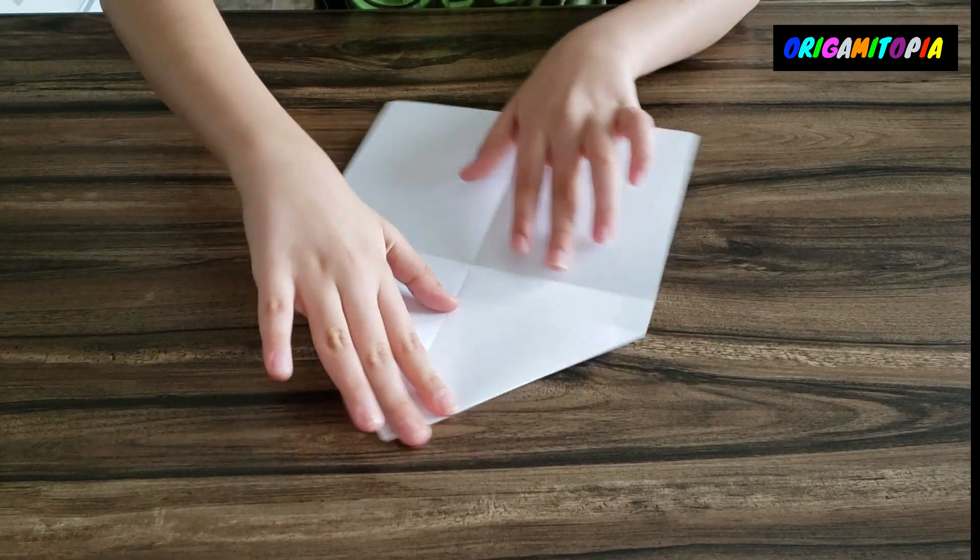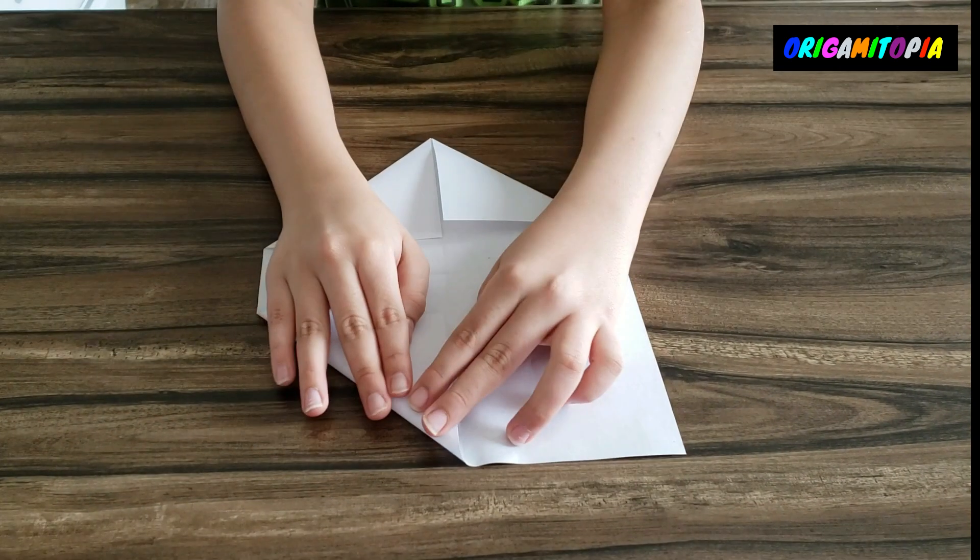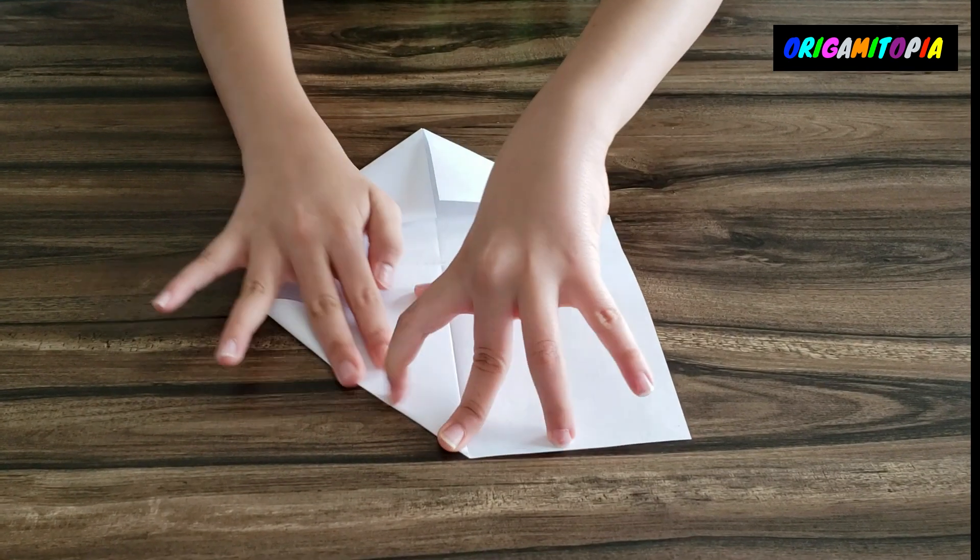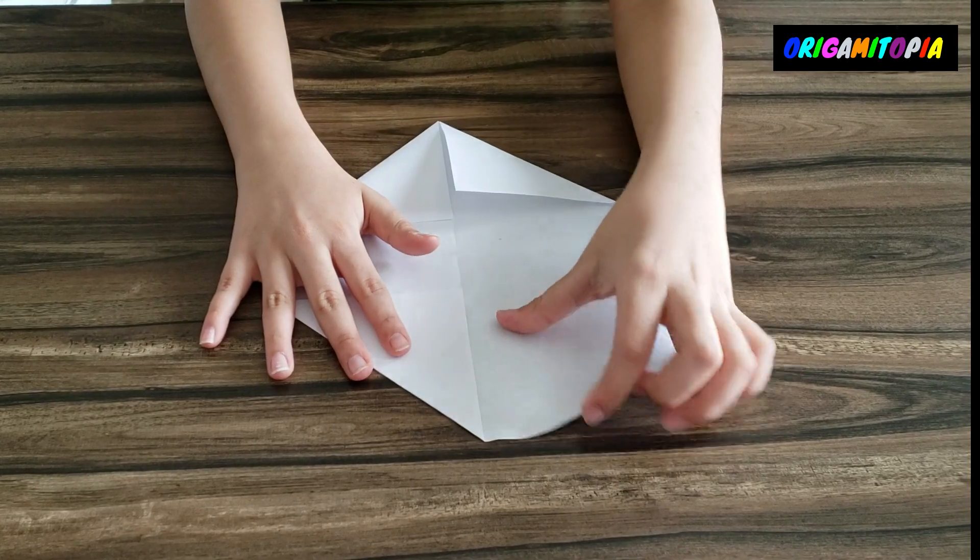Once you've done that, we'll take the paper over and then just do the same thing with this bottom. Make sure you crease sharply and align the edges as best as possible.